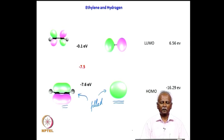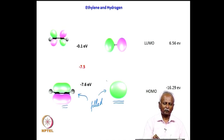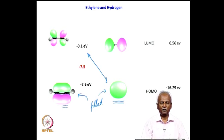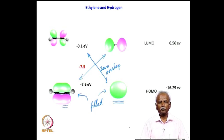What you need is an overlap between the filled orbitals of one reactant with the unfilled or empty orbitals of the second reactant, and vice versa. This is not possible because if you look at the LUMO of ethylene and the HOMO of hydrogen, there will be zero overlap. The same holds for the filled orbital of ethylene and the empty orbital of hydrogen. So this reaction cannot proceed in a simple cycloaddition-type fashion unless you have a catalyst.